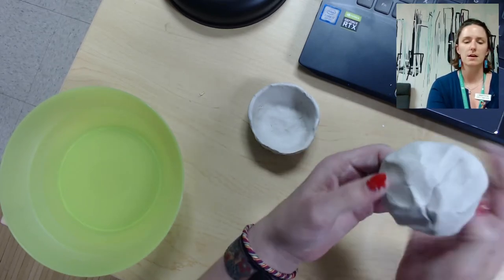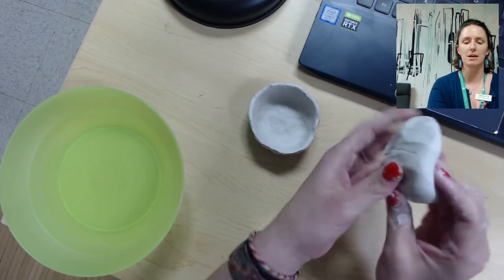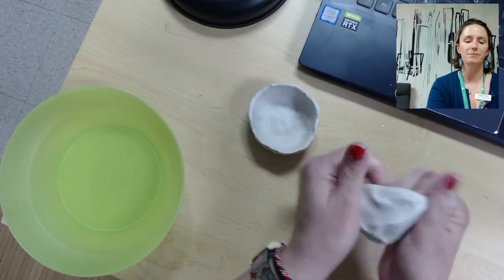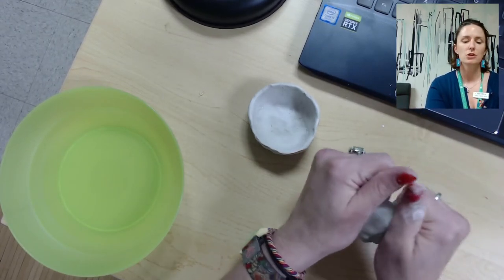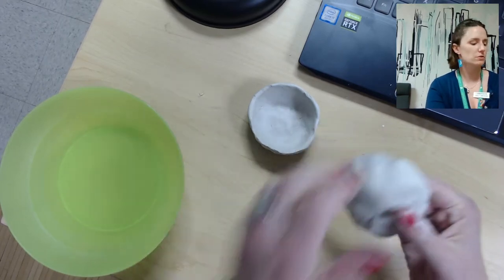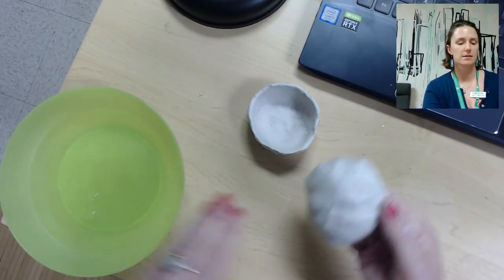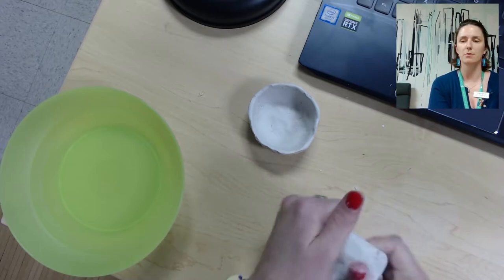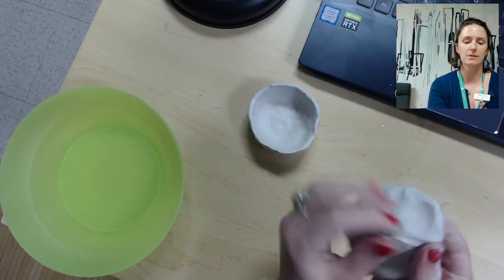Now you might see that there are little cracks happening when you are shaping it. So to limit that, you're just going to use some water. You can take your hands and just rub some water on the outside of it, and that will eliminate any cracks that you see.